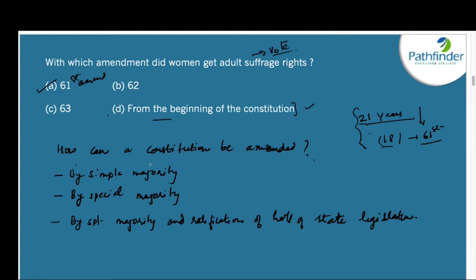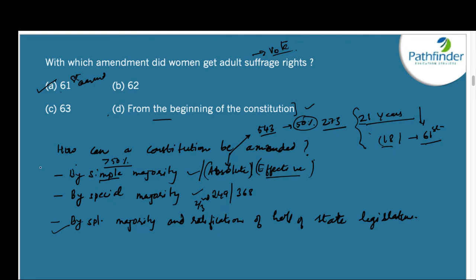How can you amend a Constitution? There are three ways: by simple majority, by special majority, and by special majority plus ratification of half of the state legislatures, depending on what needs to be amended. Simple majority means more than 50% of the members present. So if out of 543 members only 400 are present, simple majority would be 201. Absolute majority refers to the total membership — with 543 total members, absolute majority would be 273.